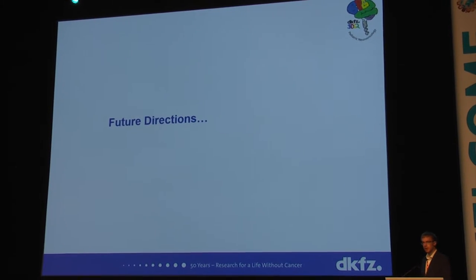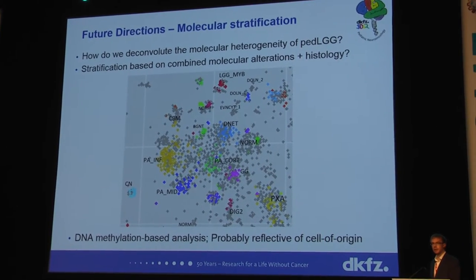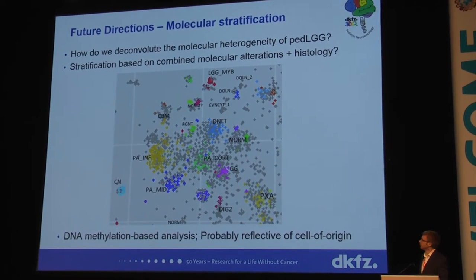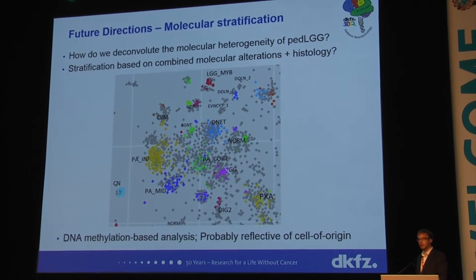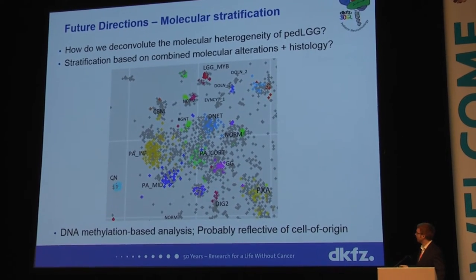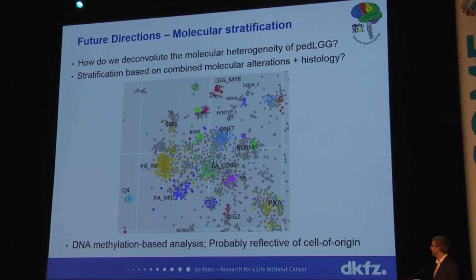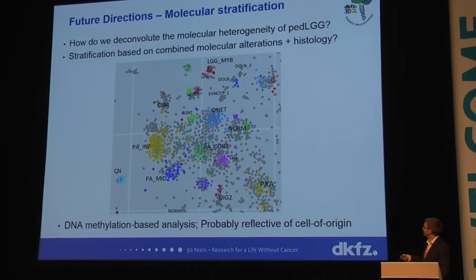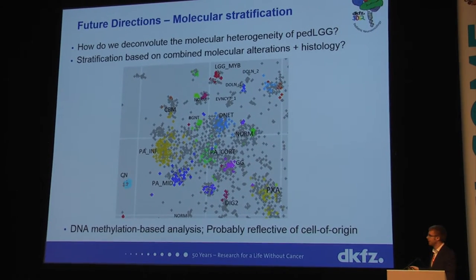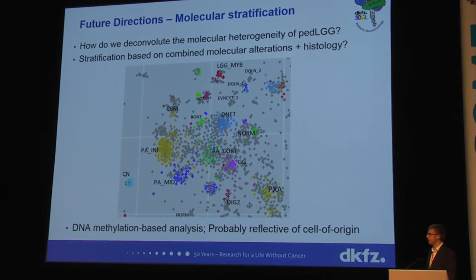Where do I think some of the future directions are? One of the major questions is how can we further deconvolute this molecular heterogeneity within what we're calling low-grade glioma as a basket? I think that stratification based on a combination of key molecular alterations combined with the histological picture is going to be the way forward. This is showing some of our DNA methylation data — you can see some of these islands of DNA methylation nicely forming with the histological groups. But if we now superimpose the genetic alterations on here, we'll get a much clearer picture than if we purely rely on histology.